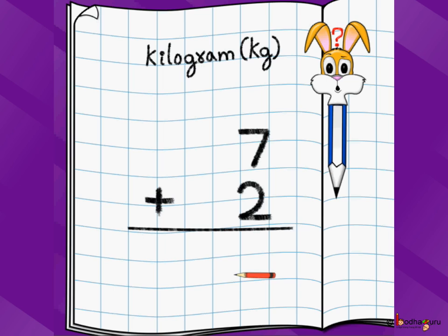We know the unit of measurement of weight is either kilogram or gram. Let's start with kilogram. Let's say we have 7 kgs of rice and we got 2 more kgs of rice. How much total rice we have? We write kg as the unit and we say 7 plus 2, which we know is 9. So we have 9 kgs of rice now with us.